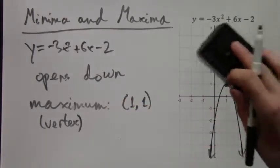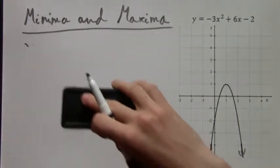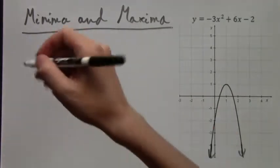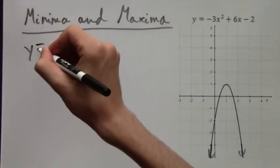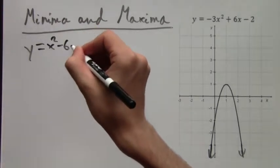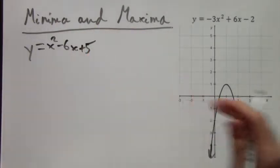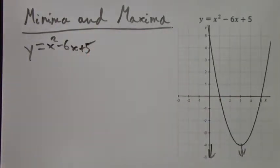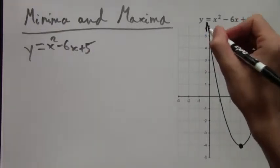So now we're going to take a look at a similar situation, but instead of a maximum, there will be a minimum. Let's take the function y equals x squared minus 6x plus 5. This function opens up. So it goes down, and then there's the minimum, and then it swoops back up. And there it is.